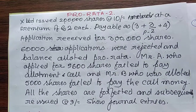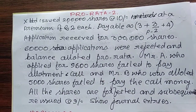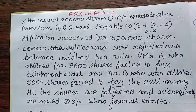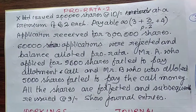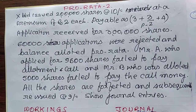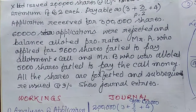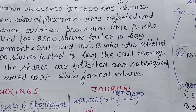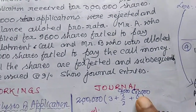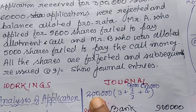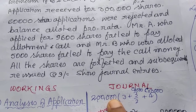Mr. B failed to pay the call money only. All the shares are forfeited and subsequently reissued at Rs. 9. Let us first prepare the workings for the 2 lakh shares actual allotment.